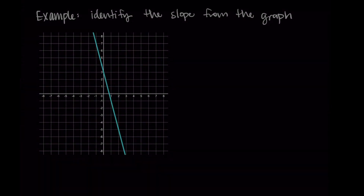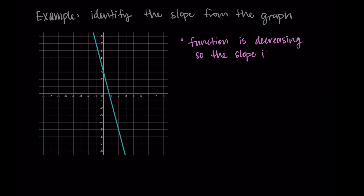Let's do one more example identifying the slope from a graph. Here I have another function — again y equals f(x) — and I'm noticing that the function is decreasing. Our previous function was increasing and now we are decreasing as we move from left to right. This means that our slope is going to be a negative value. This is a good check whenever you're doing the slope calculation, to confirm whether you should expect a positive or negative slope.